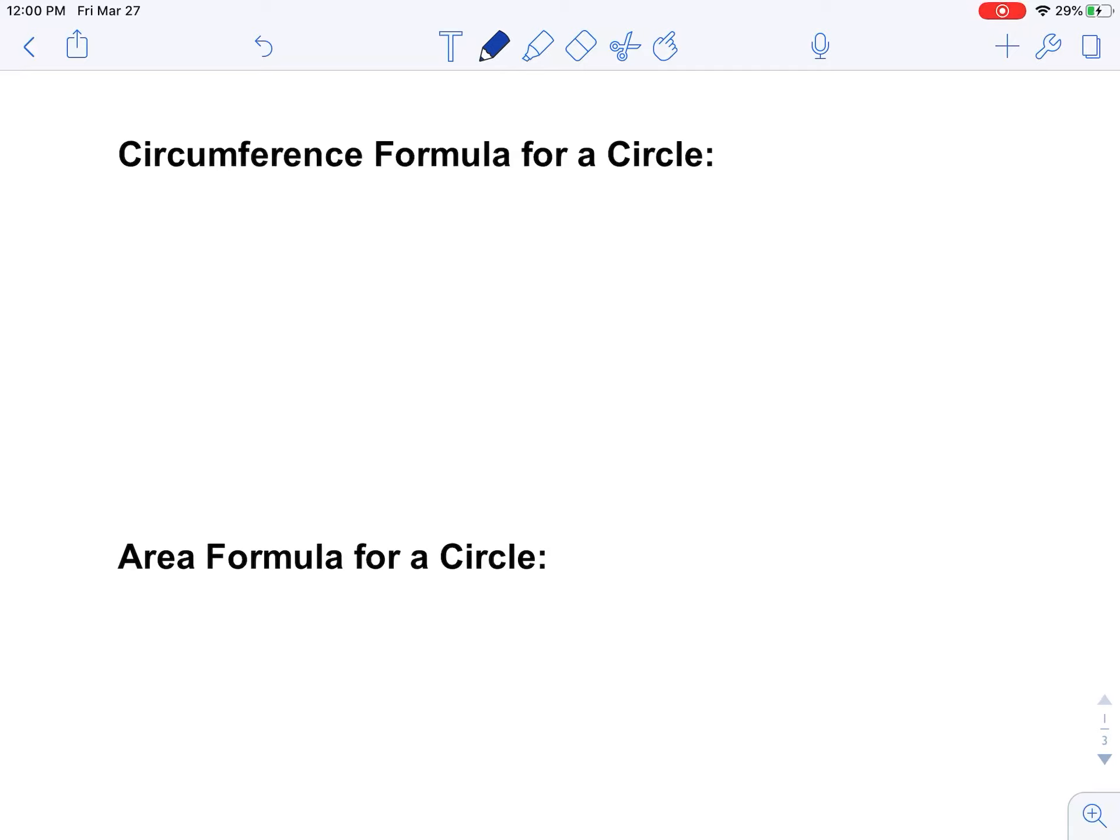They're both using circumference and area of circles. I thought it would be a good idea today to also talk about leaving things in terms of pi. So that's what we're going to do today. The formula for circumference, you all should know it, it's C equals 2πr.